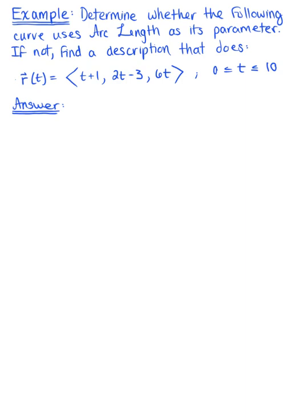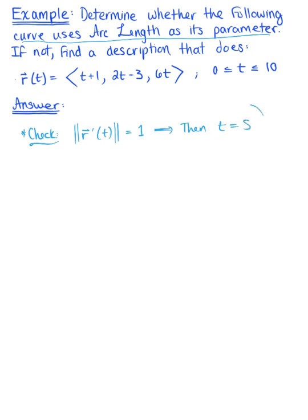So the first thing we need to determine is whether the curve is using the arc length as its parameter. To check this, we need to see: does the magnitude of the tangent vector with respect to t equal 1? If it does, then t is the arc length parameter — we can say that t equals s. So let's go ahead and check this.